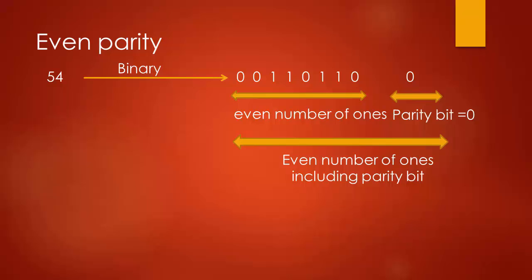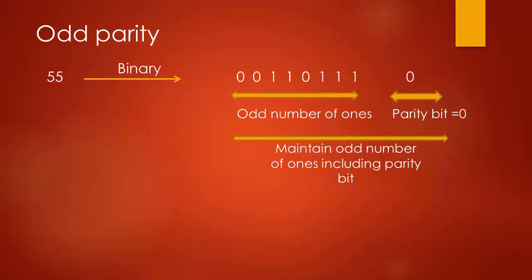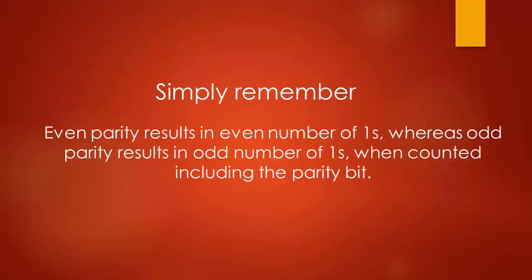When using odd parity, the parity bit is set to one if the number of ones in a given set of bits — not including the parity bit — are even, making the total count odd. When the number of ones in the data bits is already odd, the parity bit is set to zero. Simply remember: even parity results in an even number of ones, and odd parity results in an odd number of ones, when counted including the parity bit.